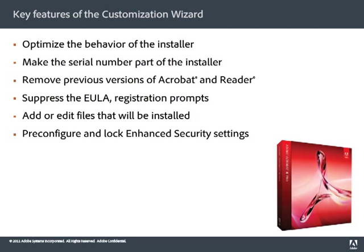Key features include the ability to optimize the behavior of the installer by including silent installation, making the serial number part of the installer and custom setup choices, remove existing installations of older versions of Acrobat and Reader, suppress the display of the end-user license agreement and registration prompts. You can also add or edit files that will be installed including customized JavaScripts, plug-ins, actions, and custom PDF portfolio layouts. And you can pre-configure and lock enhanced security settings.